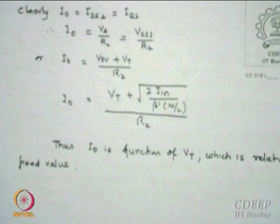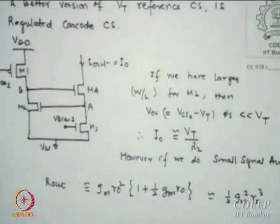We would like to see if we can improve the temperature coefficient for this source. The advantage was stability through negative feedback. A modified version replaces the resistance with a transistor in saturation mode. We call this the regulated cascode current source. I am a little fast today because next time I want to start with op-amps, so please note down.